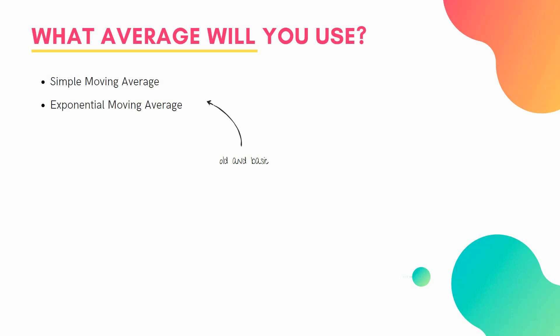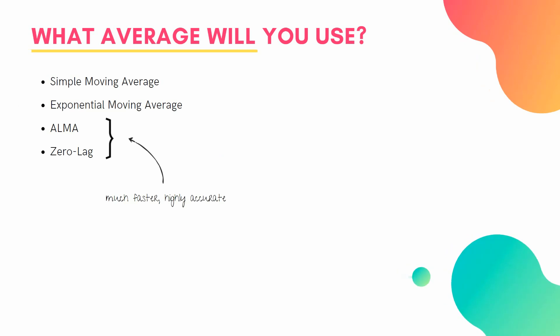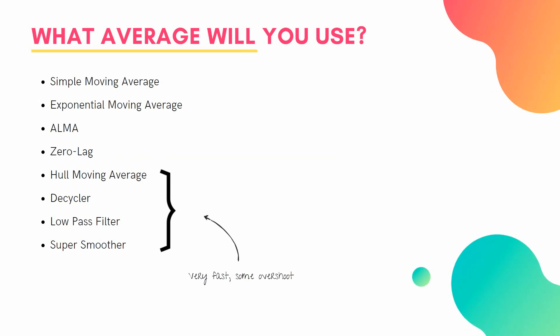You could use the simple moving average and exponential moving average — the old and basic kind. Or you could use the ALMA and zero lag moving averages — much faster than the previous two, highly accurate, with no overshoot, giving you much faster results. Or you could use one of the other four: the Hull moving average, the Decycler, the Low Pass Filter, or the Super Smoother. These are very fast but have some overshoot — in fact some are faster than ALMA and zero lag, but the trade-off is that overshoot. So which ones do you want to use?